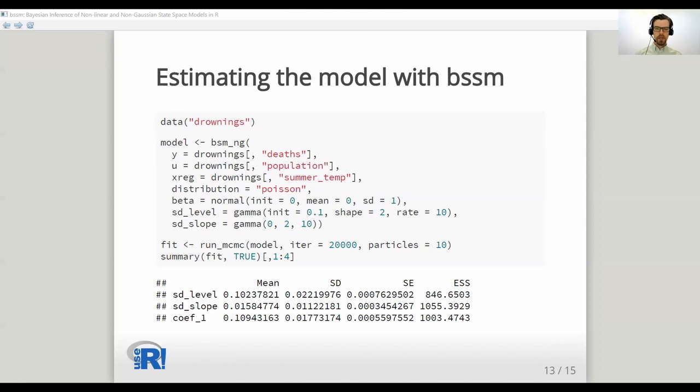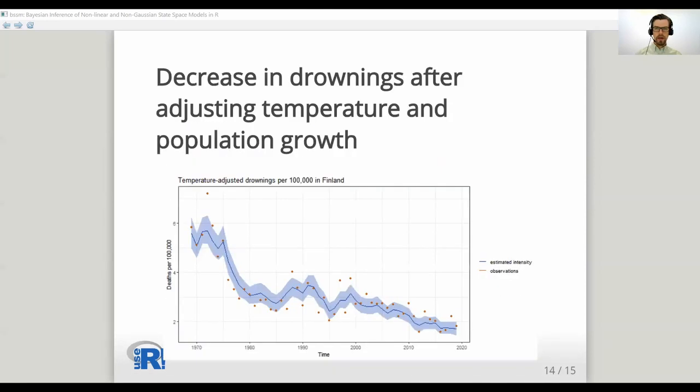We then see from the summary of theta that the temperature has a small effect. One degree rise in average summer temperature in Celsius leads to about 10 percent more drownings. And finally, we have a figure of intensity exp mu, number of deaths per 100,000, which shows that the drownings have drastically decreased in recent decades. In the 70s, we had around six drownings per year per 100,000 and now only have around two.